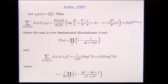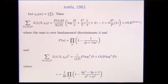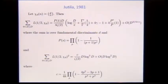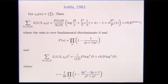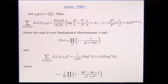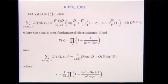Jutila in 1981 averaged L(1/2, χ_d), quadratic Dirichlet characters at the central point, and got d log d — this is a first power of the log. He also did the mean square. Sound later did the third moment of these quadratic L-functions. Kowalski, Michel, and Vanderkam studied moments of L-functions from cusp form families, going up to around the fourth moment, averaging the L-functions at the central point of weight-two level-Q modular forms.